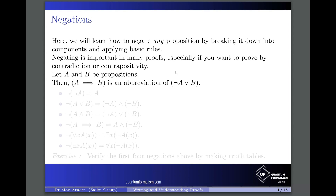If A and B are propositions, then as we've just seen, A implies B is another way of saying ¬A ∨ B. The first negation rule is that the negation of the negation of a proposition A is just A itself. Thinking in terms of truth values: if A is true, the negation of A is false, and the negation of that is again true. Likewise the negation of false is true and the negation of that is false — so the double negation always returns the original truth value.